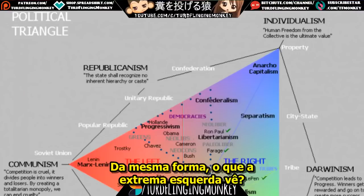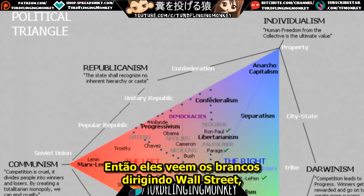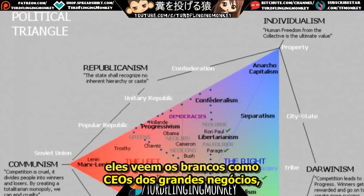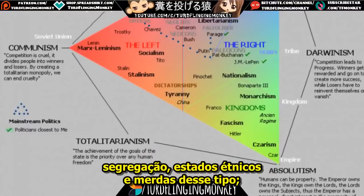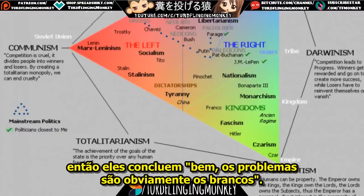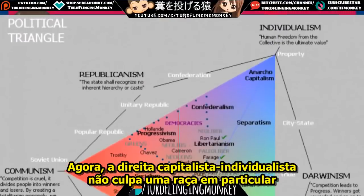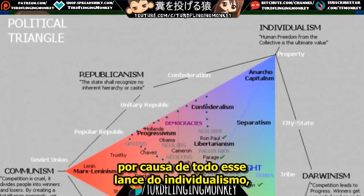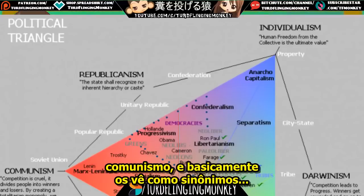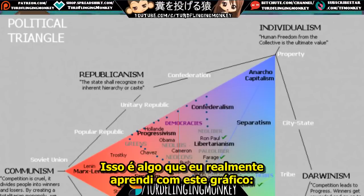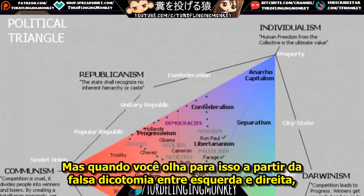Likewise, what does the far left see? They see white people. Most CEOs in the United States are white, and they also see white people advocating for segregation and ethnostates. So they conclude the problem is white people. The individualist capitalist right doesn't blame a particular race because of that whole individualism thing, but does see fascism and communism as synonymous — which, I'll admit, I actually learned from this chart, isn't really true.